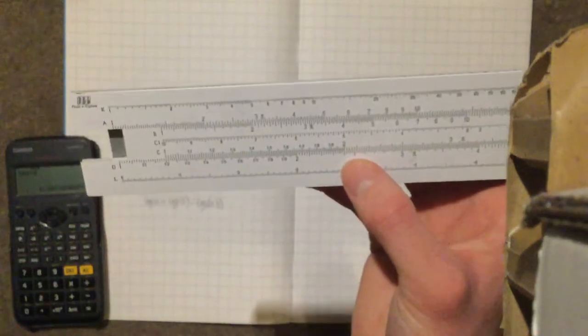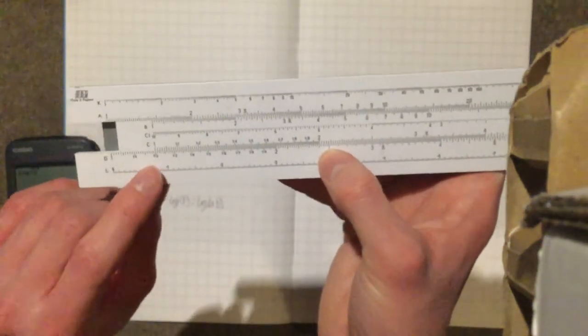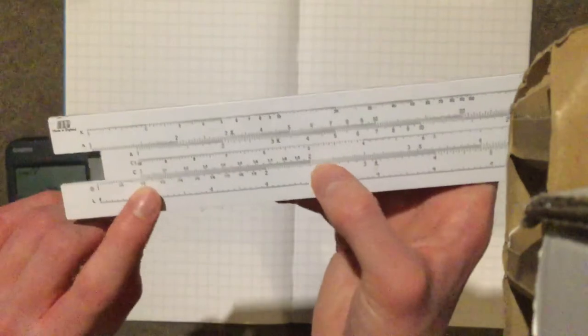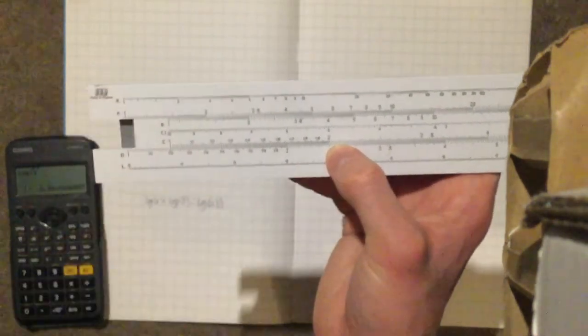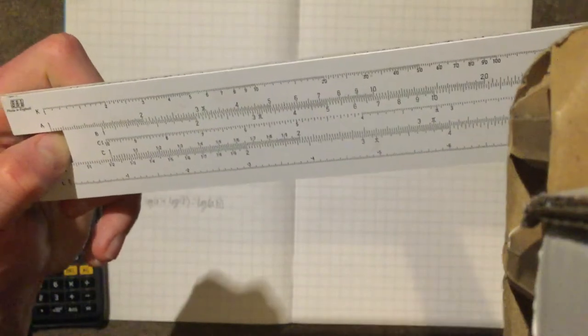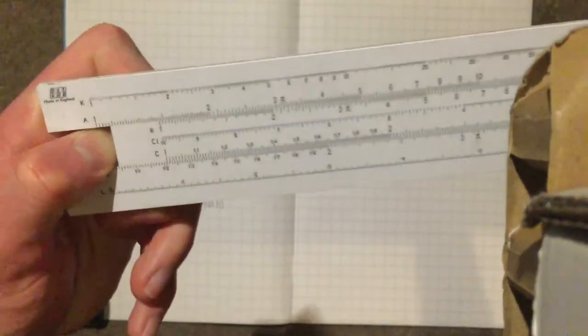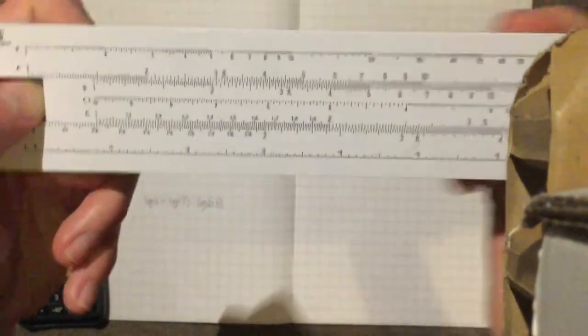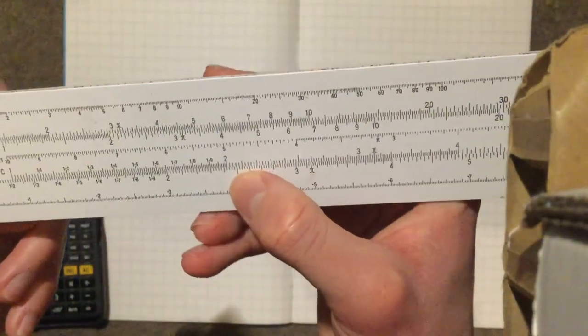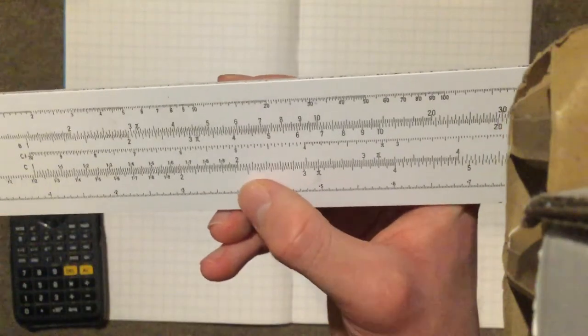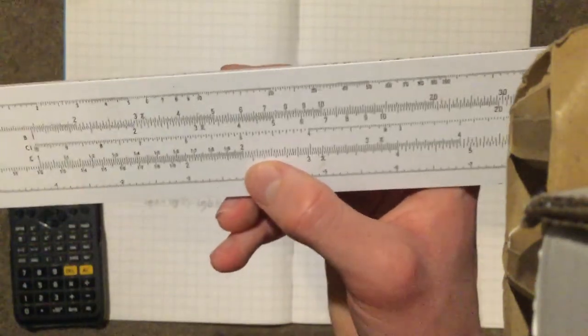But equally, that could be 12 times 2 is 24. Or 120 times 2 is 240. And let's say we wanted to do 121 times 2. You see we slide along slightly. We go over here, and we get 242.